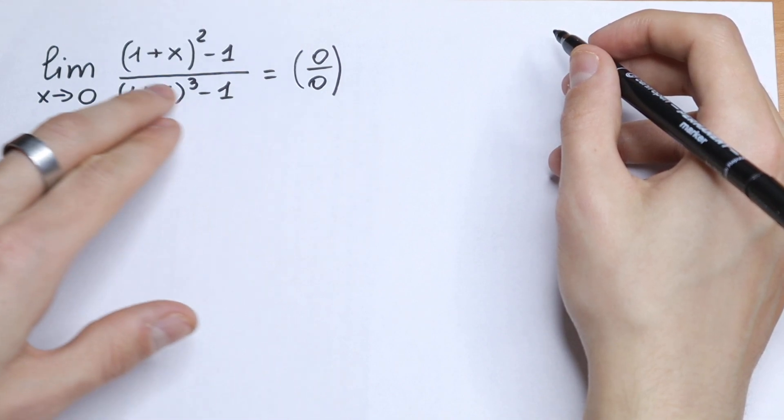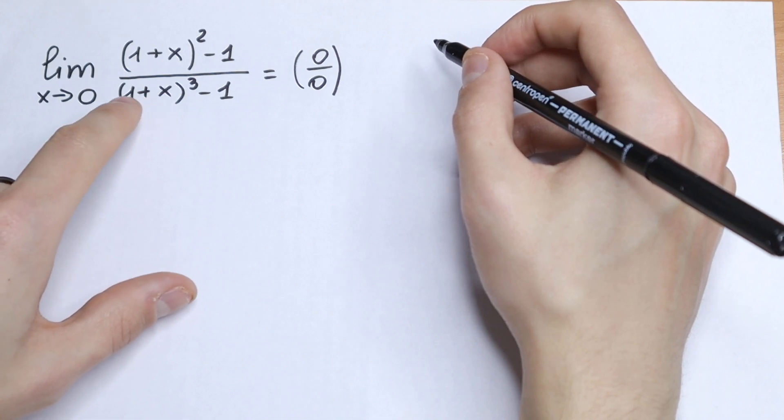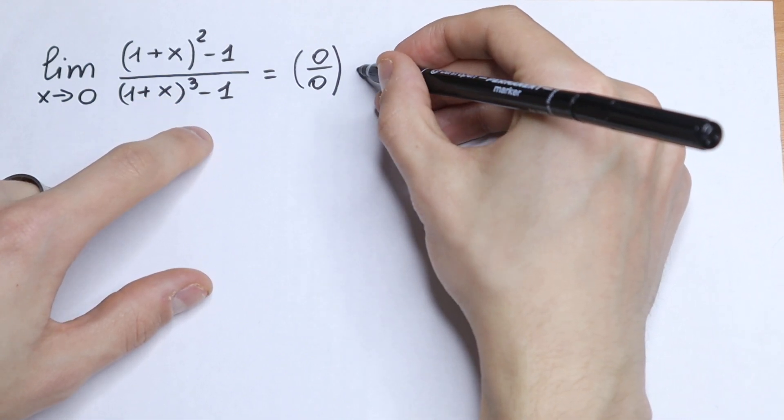So what are we going to do in our case? Let's simplify our numerator and denominator. So let's raise these to the second power and (1+x) to the third power.